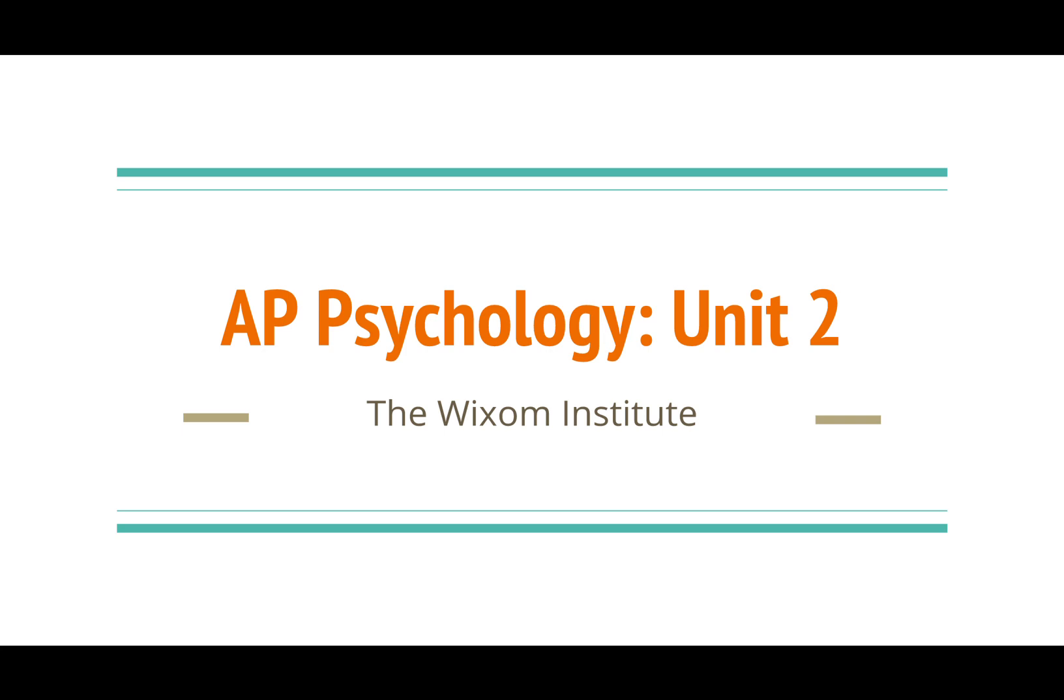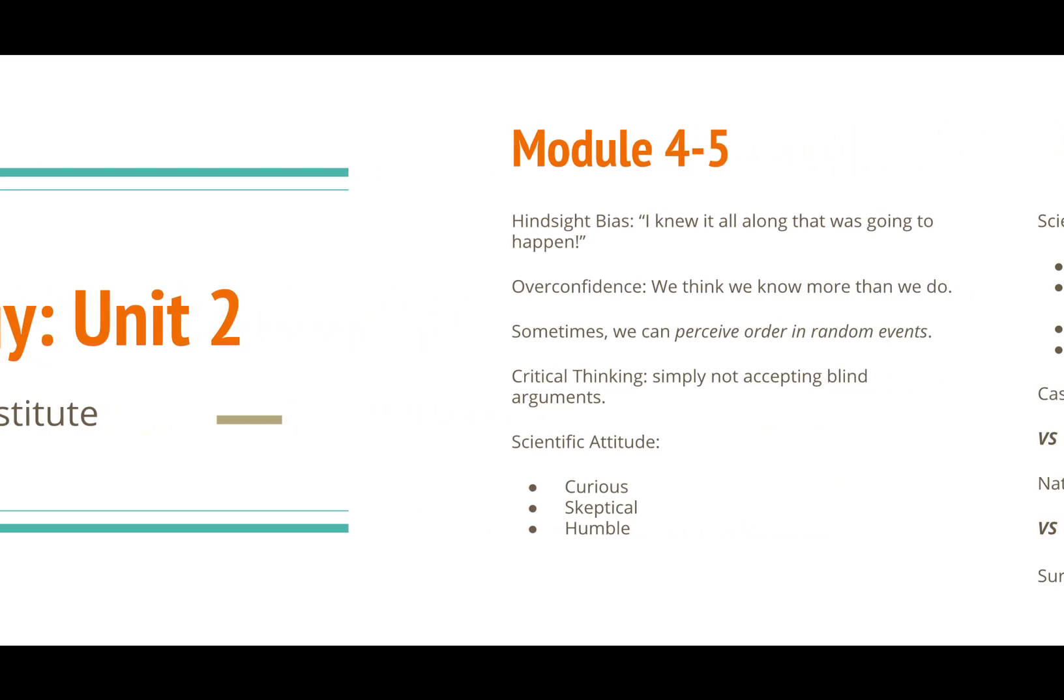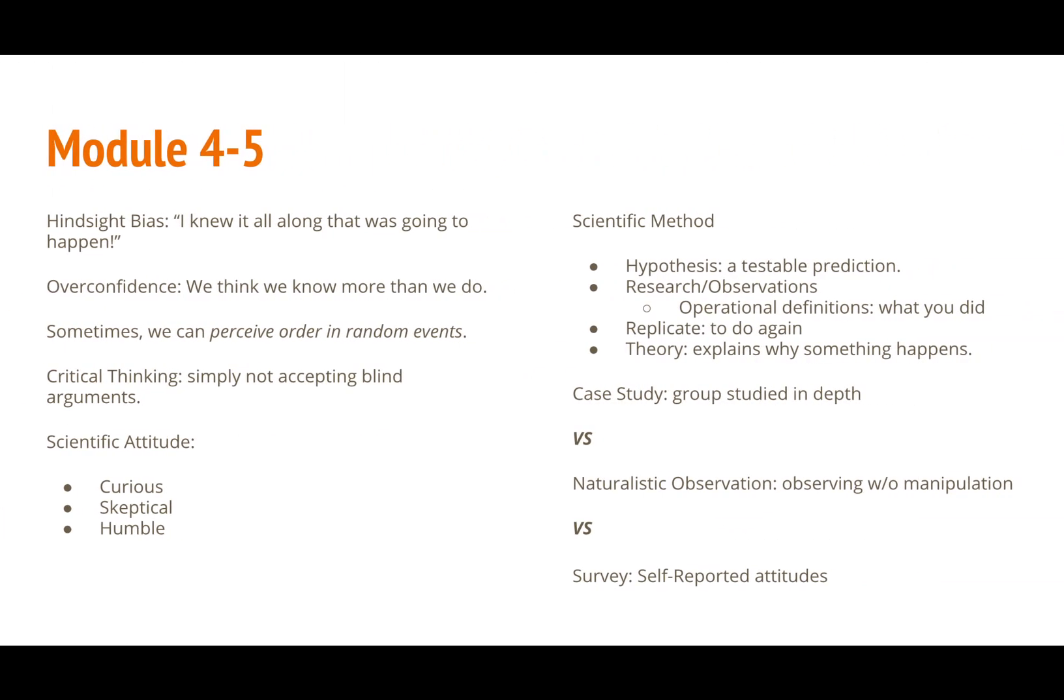This unit teaches about the possible biases and characteristics of a researcher and about statistics. Let's move on to the first two modules which describe the behaviors and possible faults of a researcher.